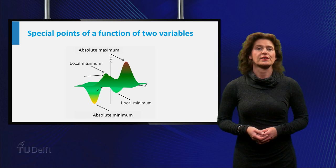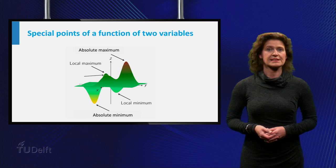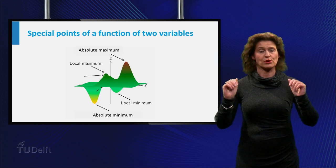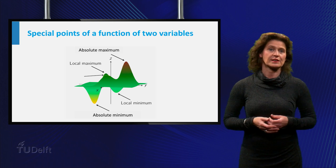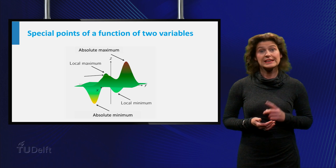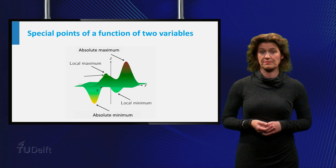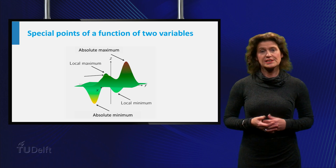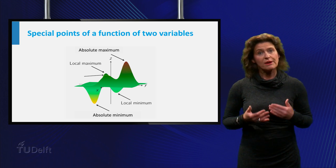In the case of a function of one variable, this means that the tangent line at the point is a horizontal line with slope equal to zero. So the derivative at that point is equal to zero, if the derivative exists. In the case of a function of two variables, a similar property holds but then for partial derivatives.